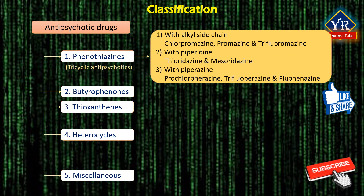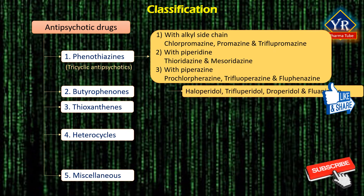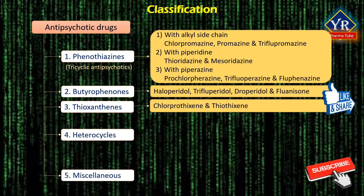Depending upon the nature of the side chain present in the phenothiazines, they are subdivided into phenothiazines with alkyl side chain, phenothiazines with piperidinal side chain, and phenothiazines with piperazinyl side chain. Chlorpromazine, promazine, and trifluopromazine are important drugs of phenothiazines with alkyl side chain. Thioridazine and mesoridazine are examples of phenothiazines with piperidinal side chain, and prochlorperazine, trifluoperazine, and fluphenazine are the phenothiazine drugs with piperazinyl side chain. Butyrophenones include haloperidol, trifluperidol, droperidol, and fluanisone. Thiothixines include chlorprothixene and thiothixene.